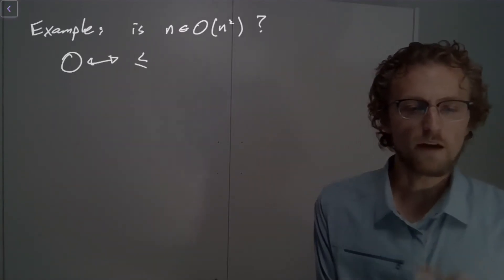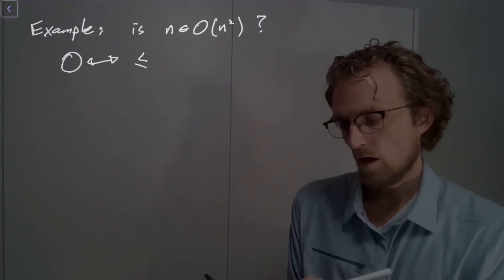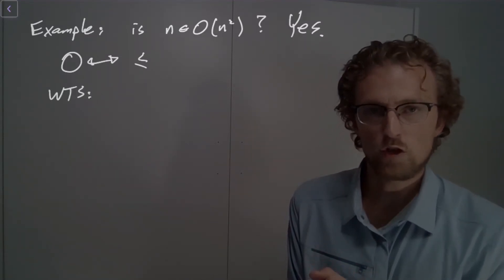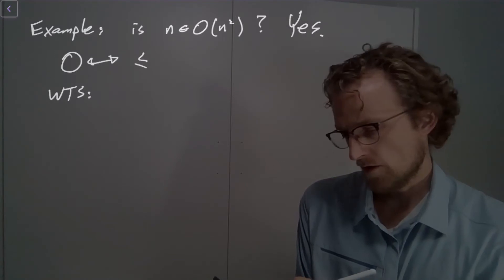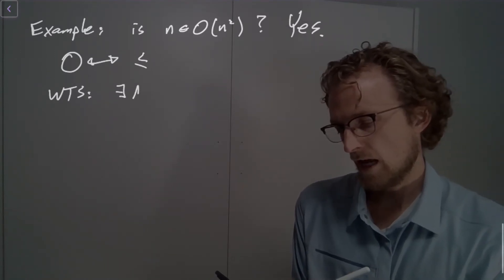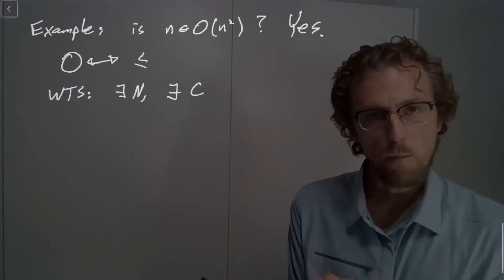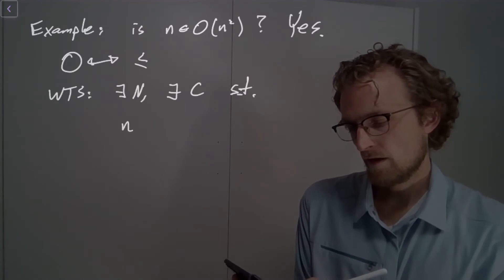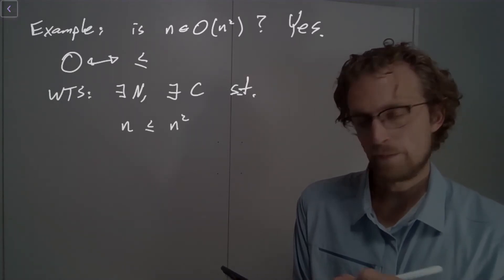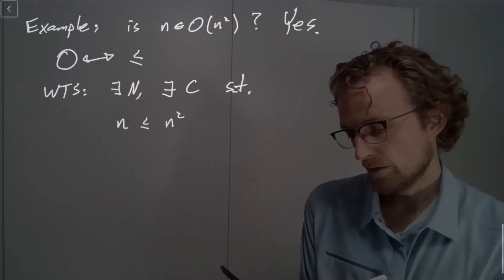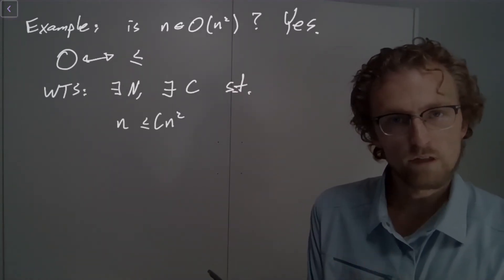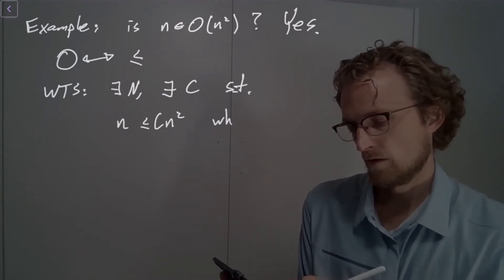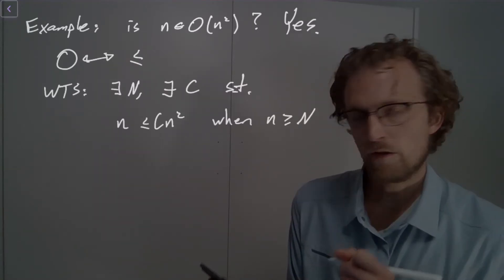Okay, so now if we're arguing from the definition, what do we want to show? We want to show that, and I'm going to write WTS for want to show. We want to show that there exists an N, and there exists a C, such that n is less than or equal to n squared, or less than or equal to c times n squared, any time little n is greater than big N.